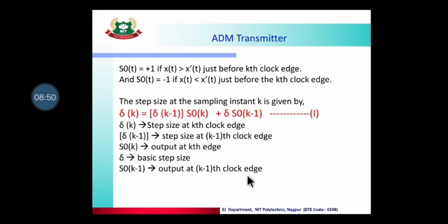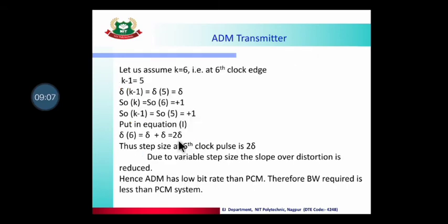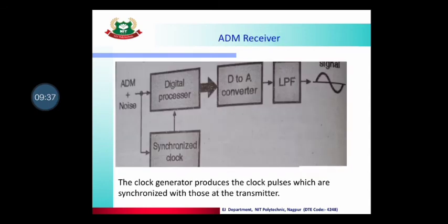To summarize the formula: delta_k is the step size at the k-th clock edge; delta_(k-1) is the step size at the (k-1)-th clock edge; S0_k is the output at the k-th clock edge; S0_(k-1) is the output at the (k-1)-th clock edge; and delta is the basic step size. For the 6th location, k=6 and k-1=5. For the 7th location, k=7 and k-1=6. Substituting values gives 2 times delta at the 6th location. Because of this variable step size in ADM, slope overload distortion is reduced and bandwidth requirement is also reduced.